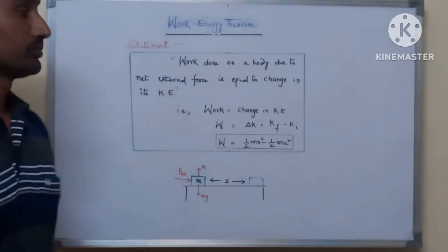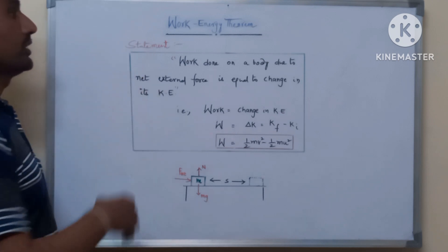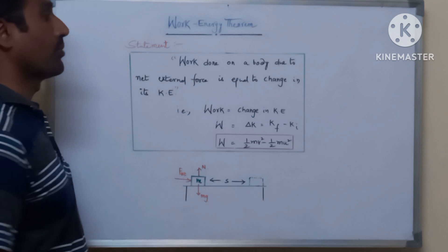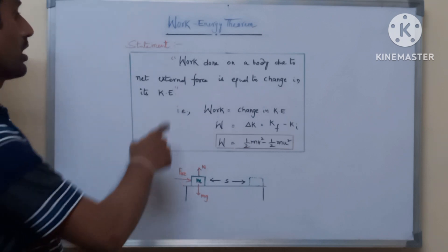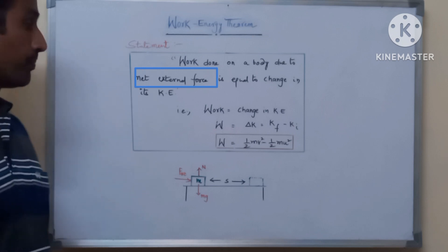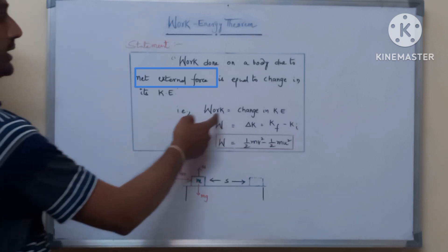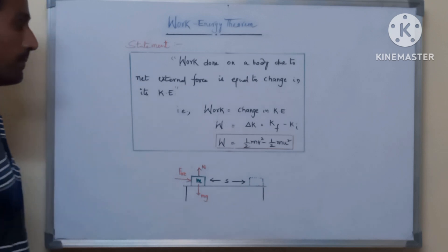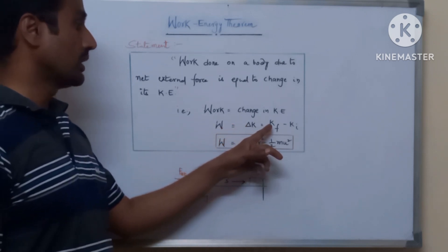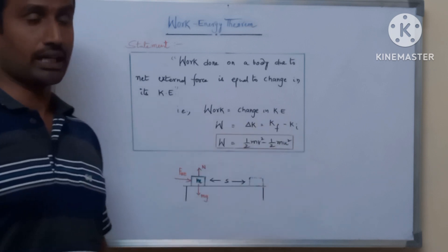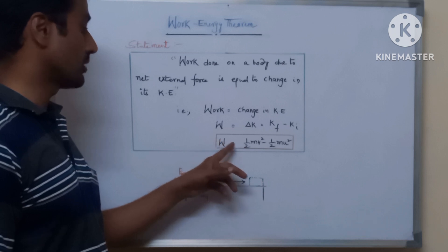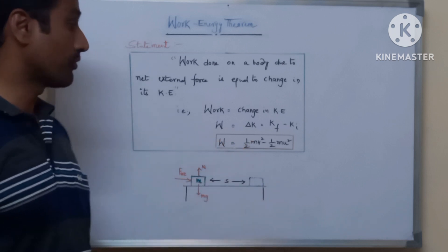Work-energy theorem states that the work done on a body due to an external force is equal to the change in its kinetic energy. That is, work done equals delta K, which equals final kinetic energy minus initial kinetic energy. We can write this as W equals half mv squared minus half mu squared.